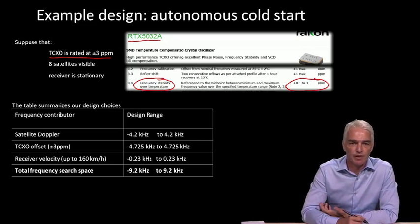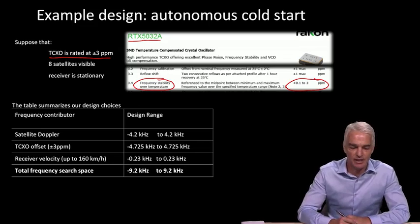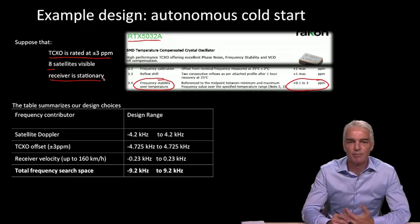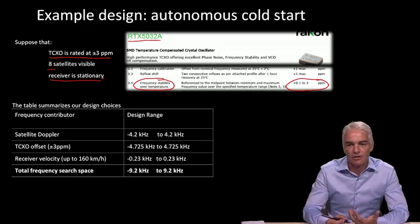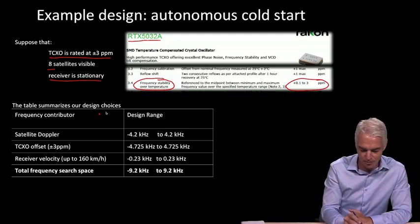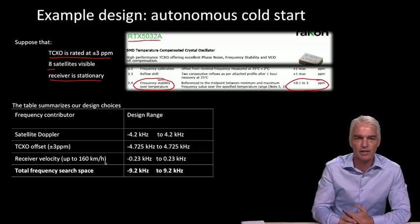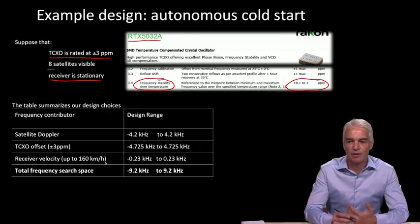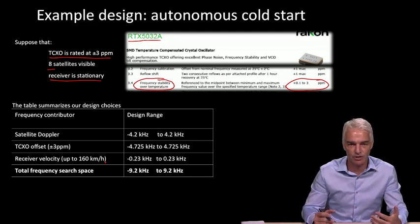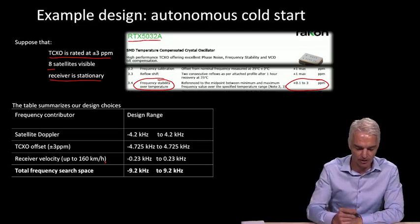For our example, we have to make some assumptions on how many satellites are visible and how we're going to search for them. We assume there are eight satellites visible, and we're going to assume the receiver is stationary for our test values, but we're designing a receiver that would work in a typical consumer environment. So even though the receiver is stationary, we make design choices for a receiver that's not stationary. That's typical — you design for some envelope of use cases and then test your design with some assumptions.